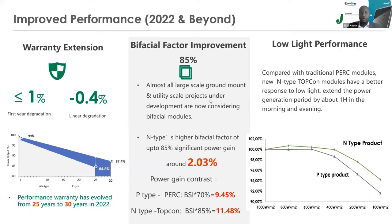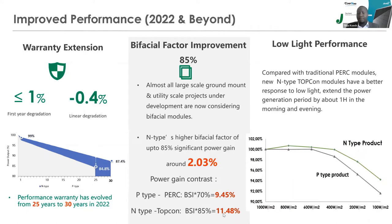Most large-scale ground-mount CNI and utility-scale projects now consider bifacial modules to achieve low LCOE. A key factor for bifacial modules is the bifaciality factor: mono PERC modules have a bifaciality factor of about 70%, while new N-type TopCon modules reach 85%. Increasing the bifaciality factor from 70% to 85% results in an increase in rear-side gain of approximately 2.03%, which is very significant. If the rear gain from a normal mono PERC module was around 9.45%, with N-type TopCon you can achieve close to 11.5% rear gain.